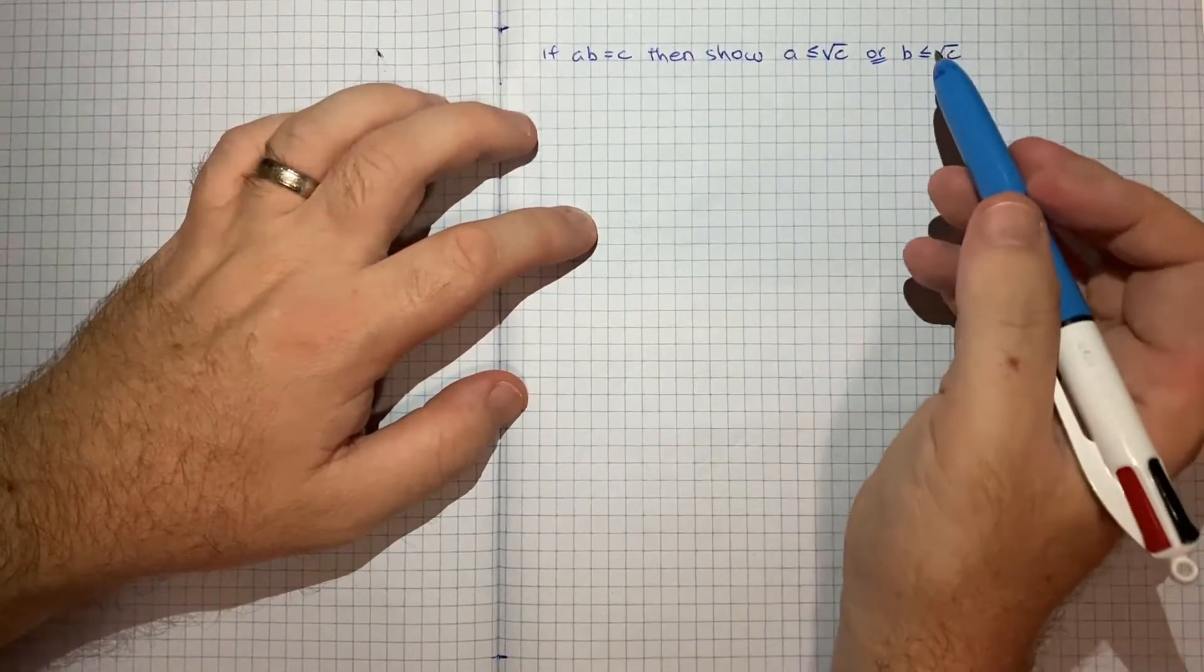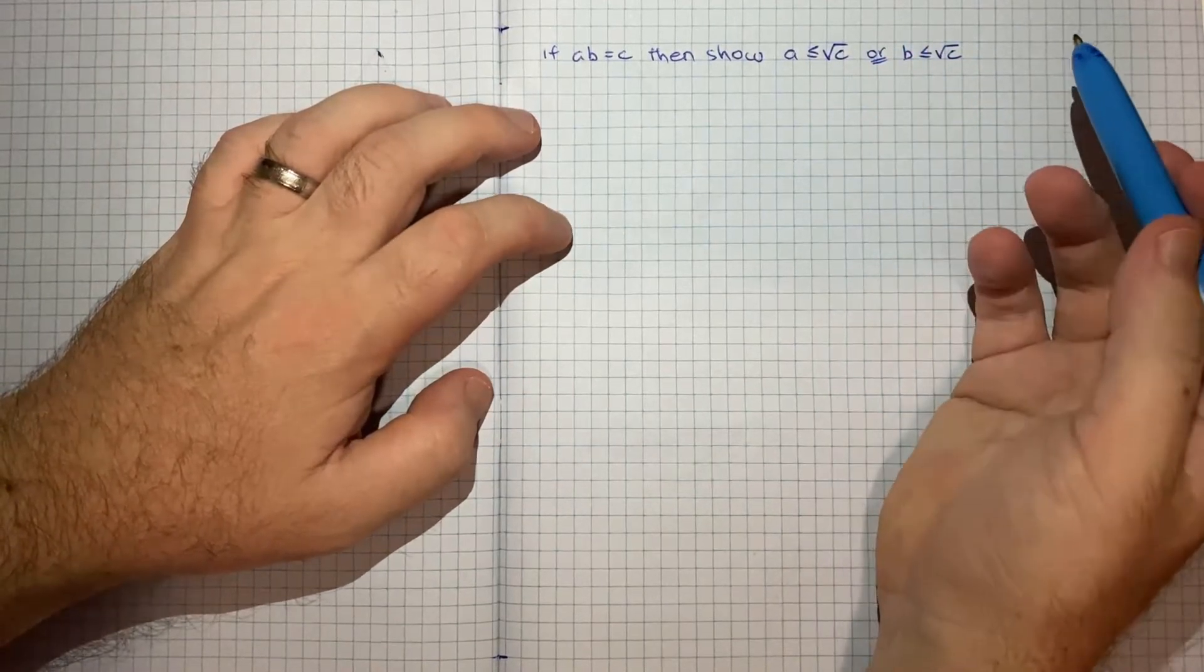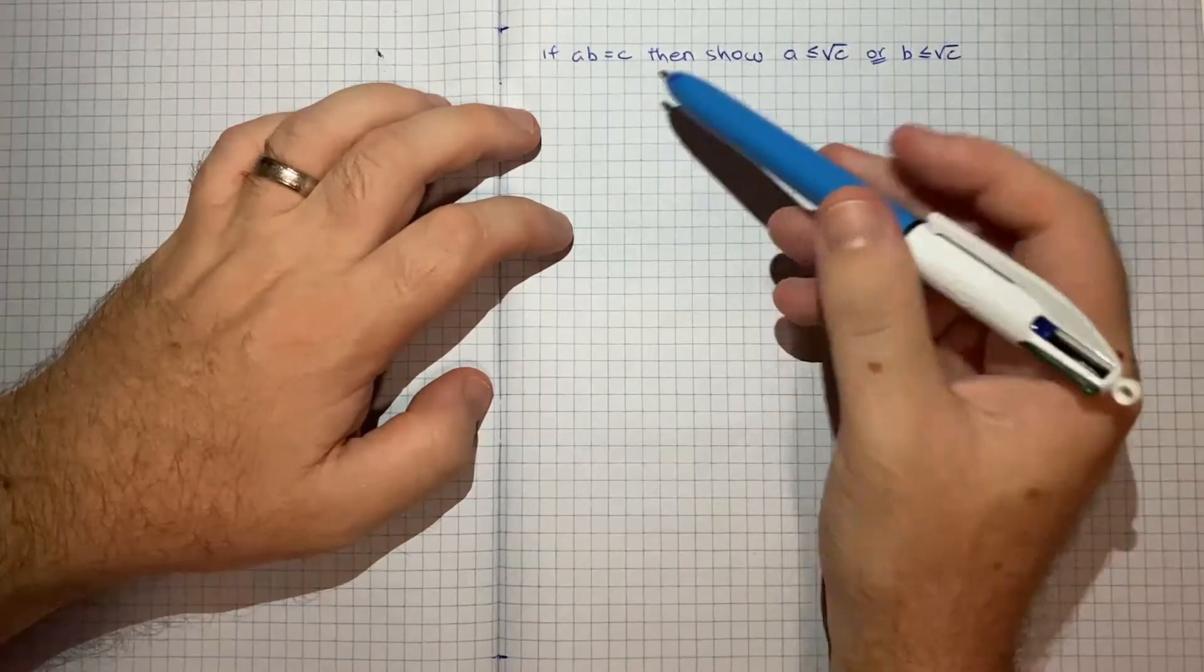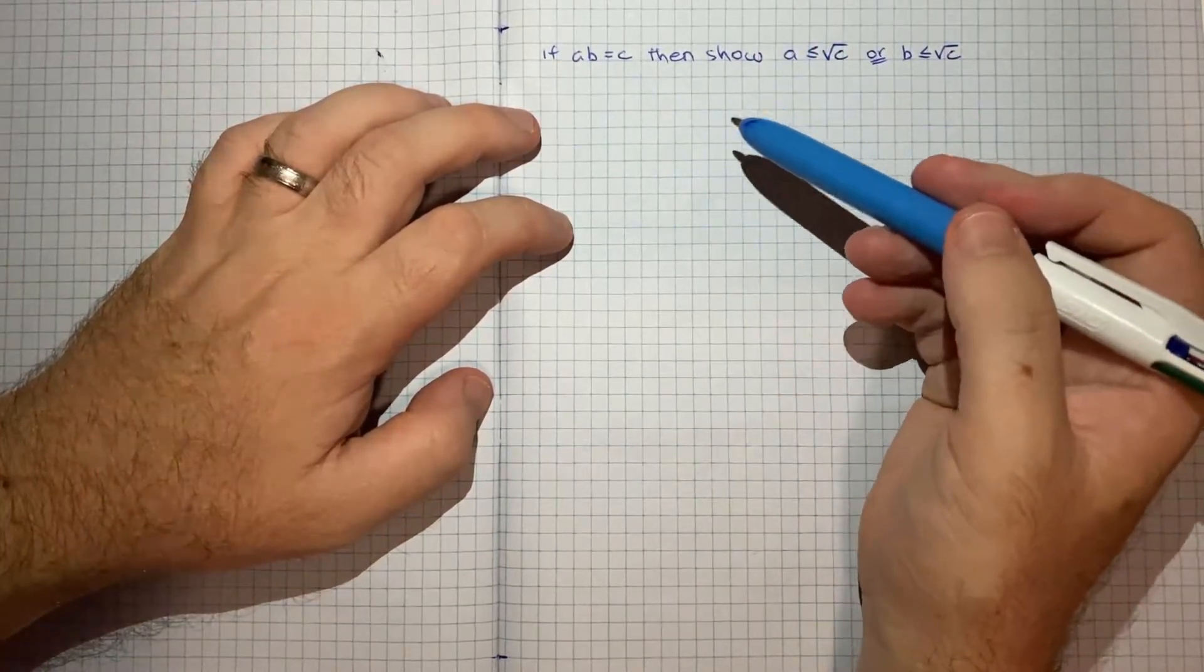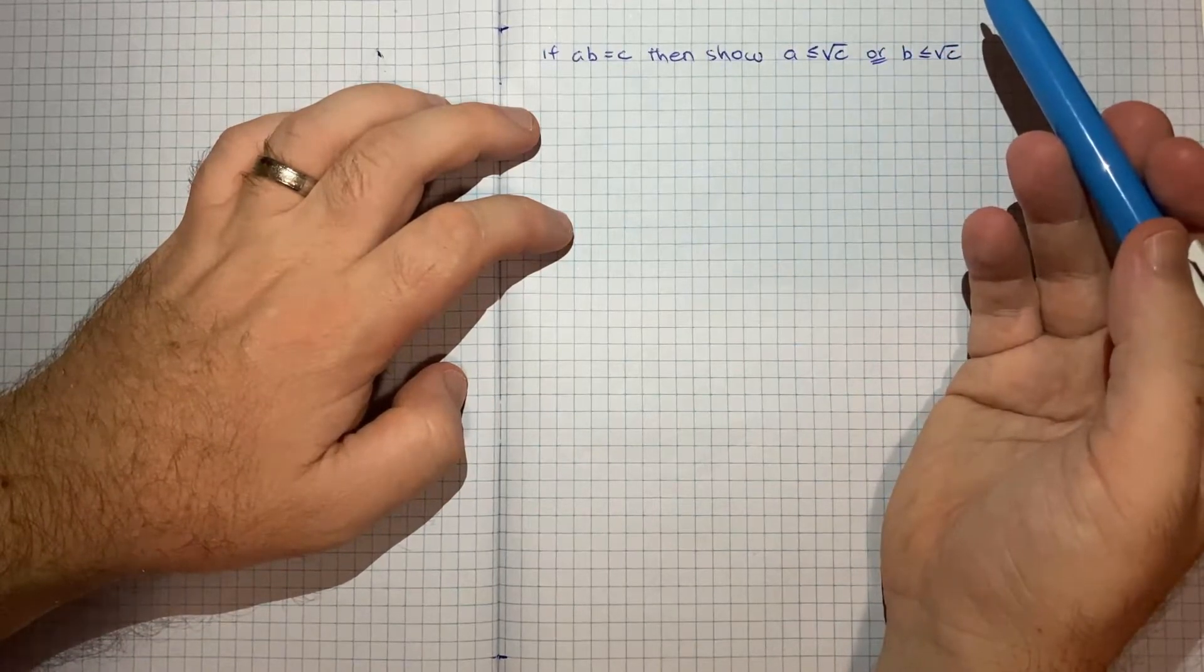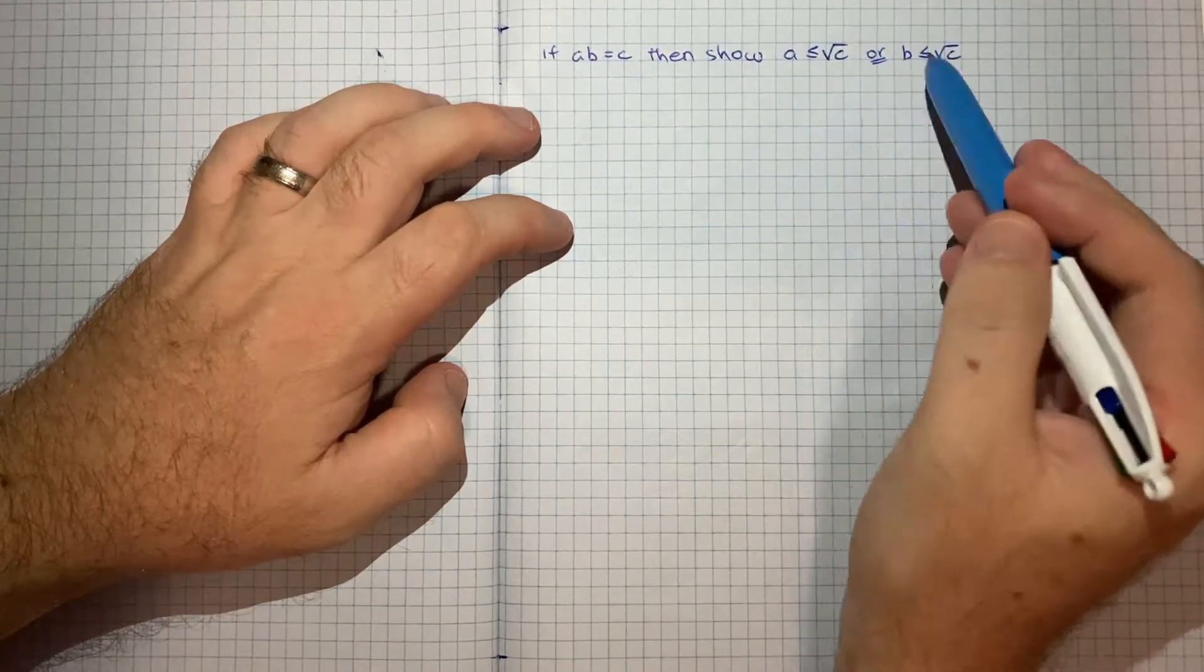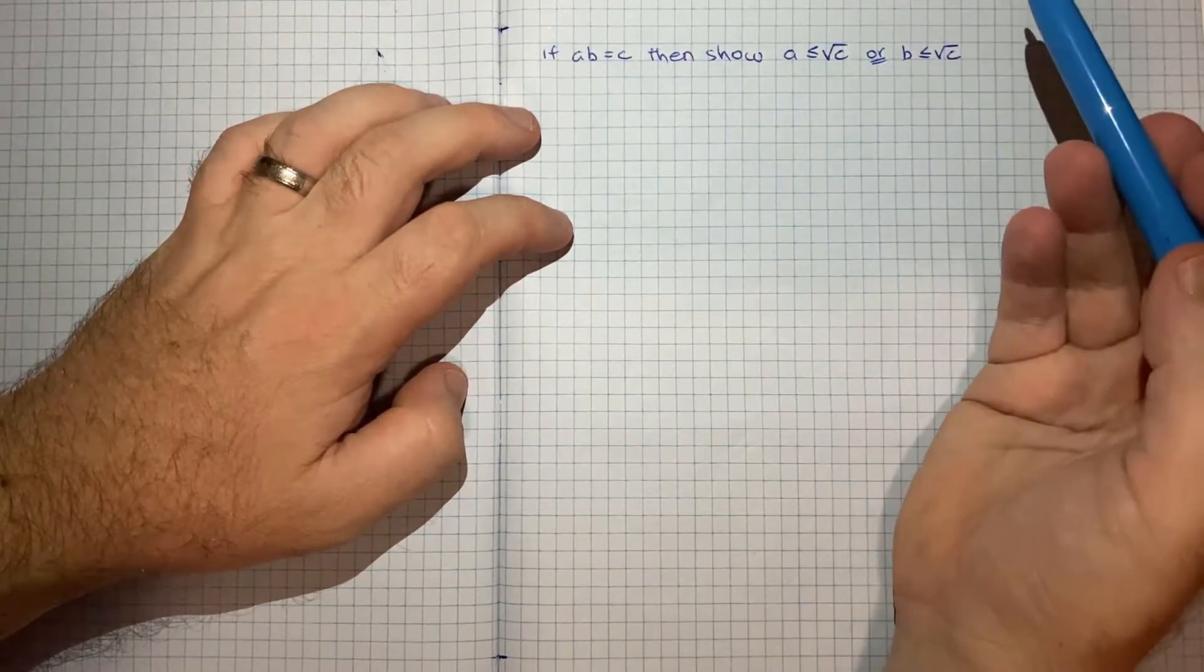Now with a proof like this, sometimes the difficulty is in knowing what technique to use. So for example, when I was looking at this, I first went down a path of trying the AMGM inequality to see whether that could yield any fruit, like get me to this result, but there was no luck there.